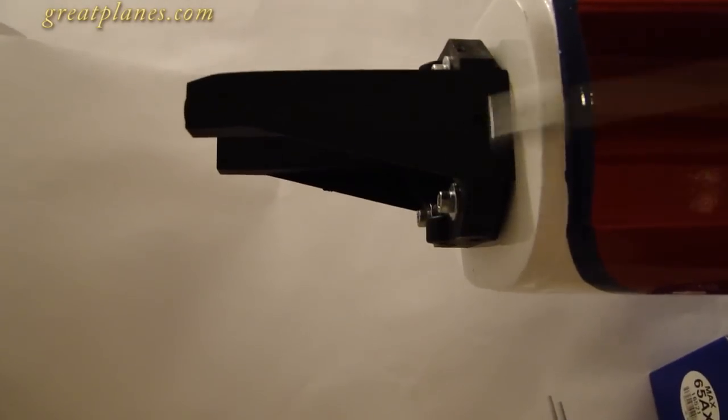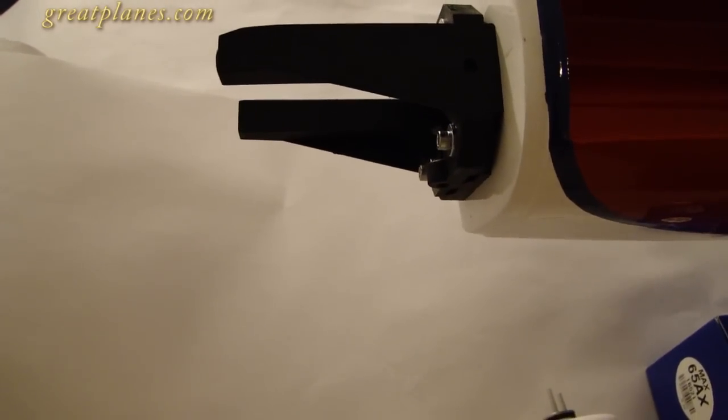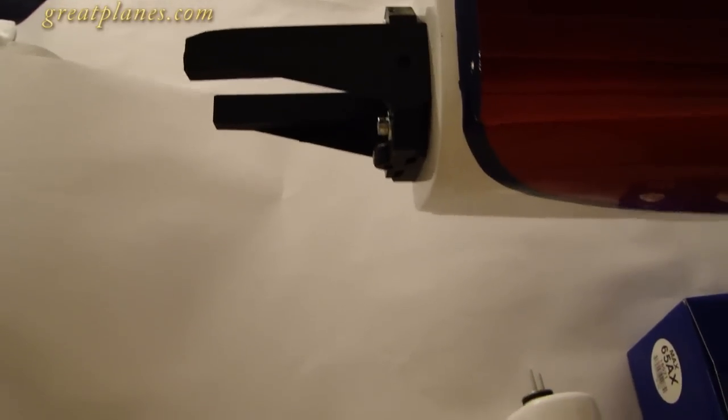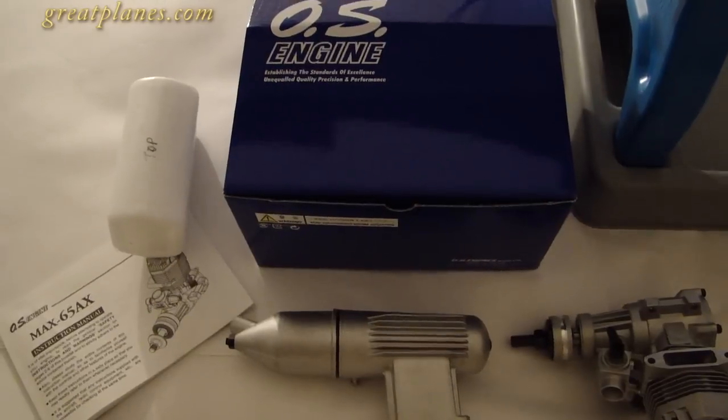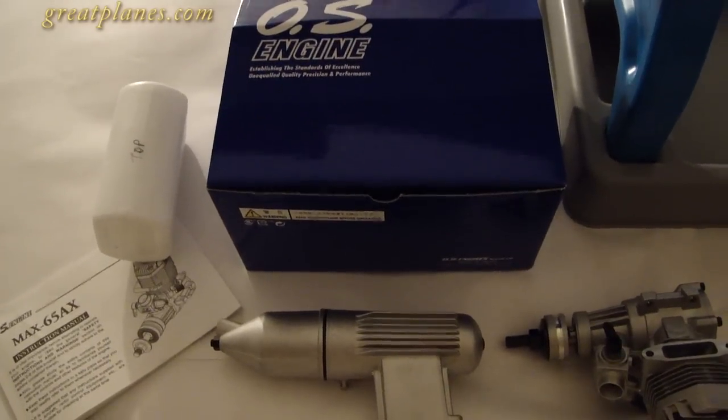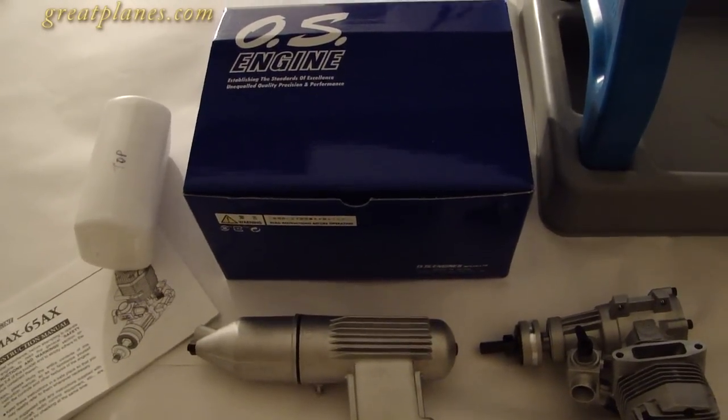This is your engine mount. As you can see, we've got it installed. You've got to properly space it for the engine that you've selected. We've done that. Here is the fuel tank. This is the top of the fuel tank. We went with a two fuel line system. You can go with a three line system. It's up to you, your choice.